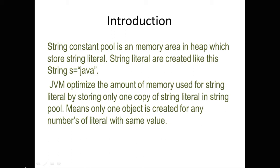String constant pool is a memory area in heap which stores string literals. String literals are created like this: string s equal to Java. JVM optimizes the amount of memory used for string literals by storing only one copy of the string literal in the string pool. It means only one object is created for any number of literals with the same value.